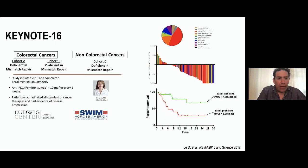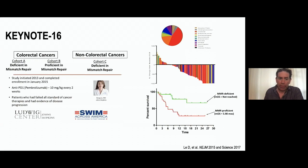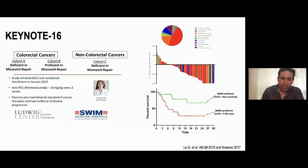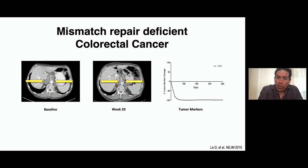We initiated the study in early 2013. The first cohort was colorectal cancers with mismatch repair deficient tumors; the second was colon cancers with mismatch repair proficient tumors; the third was mismatch repair deficient non-colorectal cancers. We treated with pembrolizumab at 10 milligrams per kilogram every two weeks, enrolling only patients who had failed all standard of care therapies. Results were significant — one patient with a very large progressive mismatch repair deficient colorectal cancer received anti-PD-1 and by week 20 had achieved almost a complete response, with tumor marker normalized after two doses.